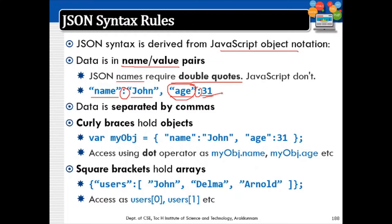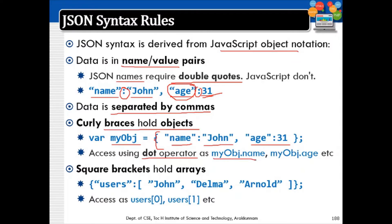The format is: name (in double quotes), colon, then the value — instead of an equals sign, we write colon followed by the value. Data is separated by commas. Curly braces hold objects; within curly braces you give name-value pairs. For example, an object contains two values — name and age — and can be accessed using dot notation: myObject.name and myObject.age.